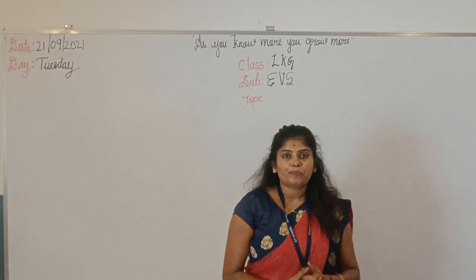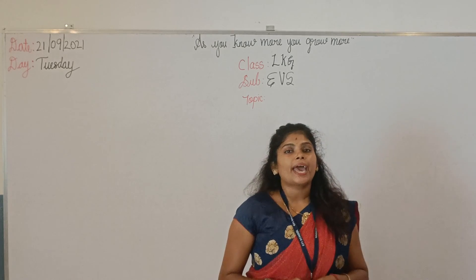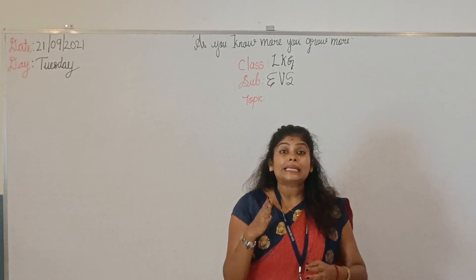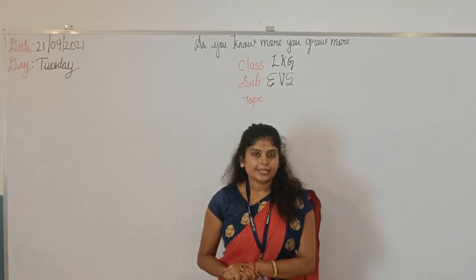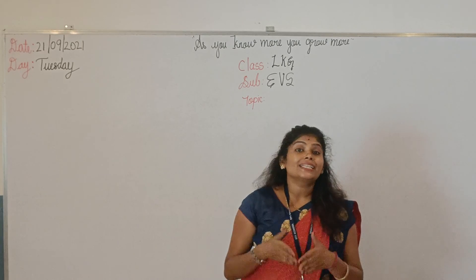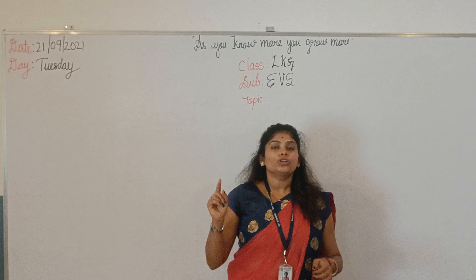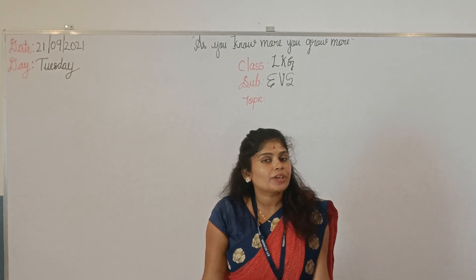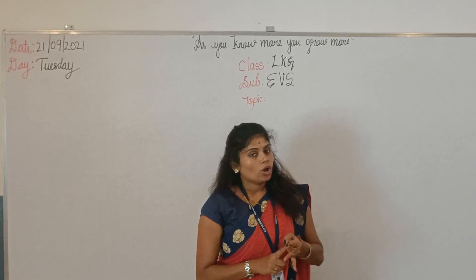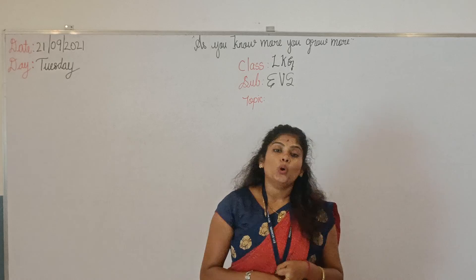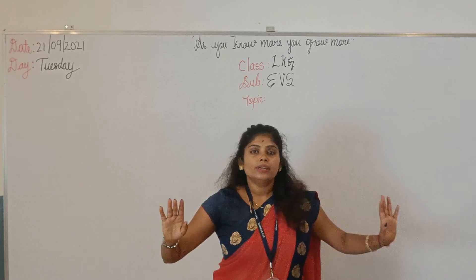Let's discuss about our previous section. Tell me — what lesson do we have? We are in the lesson 'Places Around Us.' What are the places and their names we have learned in our previous class? The places we have learned: the market, the hospital, then police station, and the school. These are the places around us.